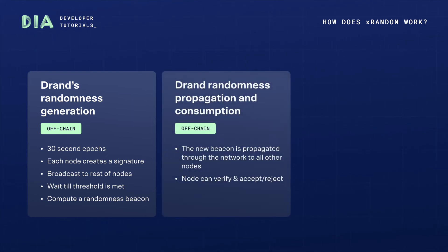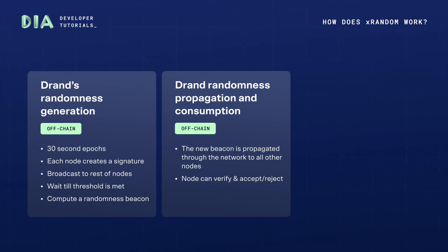Second, DRAND randomness propagation and consumption: any node can now verify and accept or reject the hash of the signature that it received. Any client or application can consume this randomness out of band — that means without needing to be part of the DRAND network — either through their public HTTP APIs or through the libP2P pubsub protocol called gossip sub. Clients can also verify that the randomness they received is indeed the one that was produced by the DRAND network by the signature of the League of Entropy.